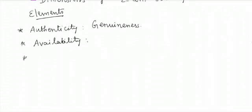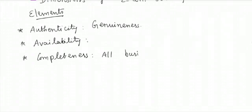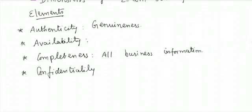The next one is completeness, which relates to confidentiality. Here you have to protect all the details so that they must be more secure, and the unauthorized person should not be able to take your information. It is about protecting data from unauthorized access.